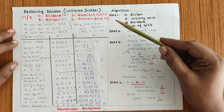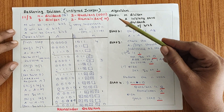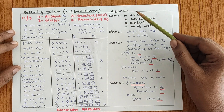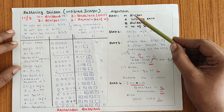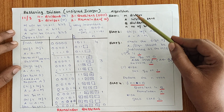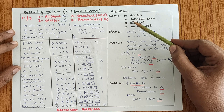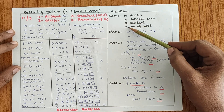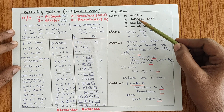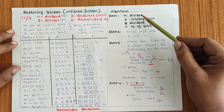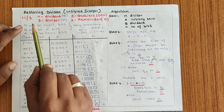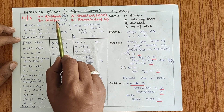Before going to the restoring division problem, let us discuss about the algorithm. Similar to Booth algorithm, here we need three registers: M, A, Q, and N represents number of bits. M is a divisor. According to this example, 3 is a divisor, so M is 3.